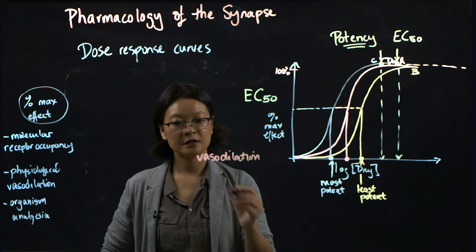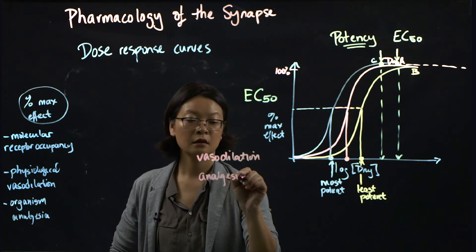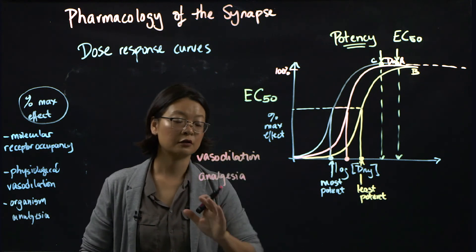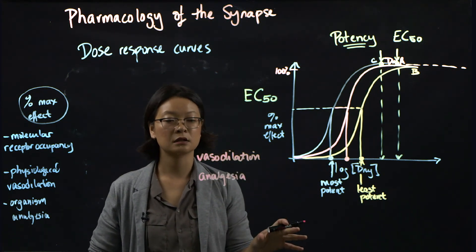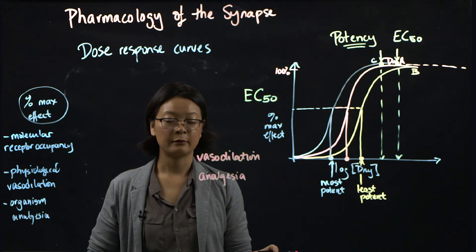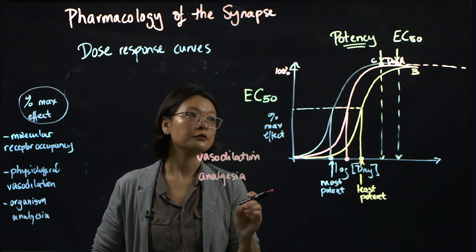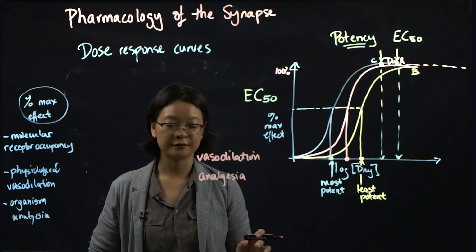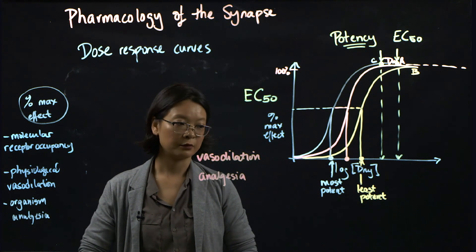Same thing for analgesia. We often don't need a drug to completely block all sensation for a patient to get benefit from analgesia. So therapeutically, drugs often work within the EC50 range that produce therapeutic benefit.